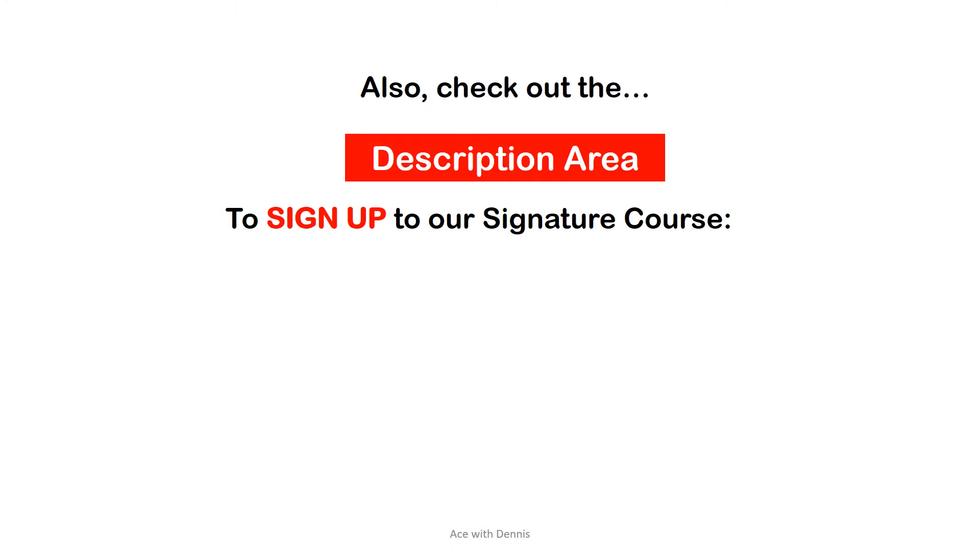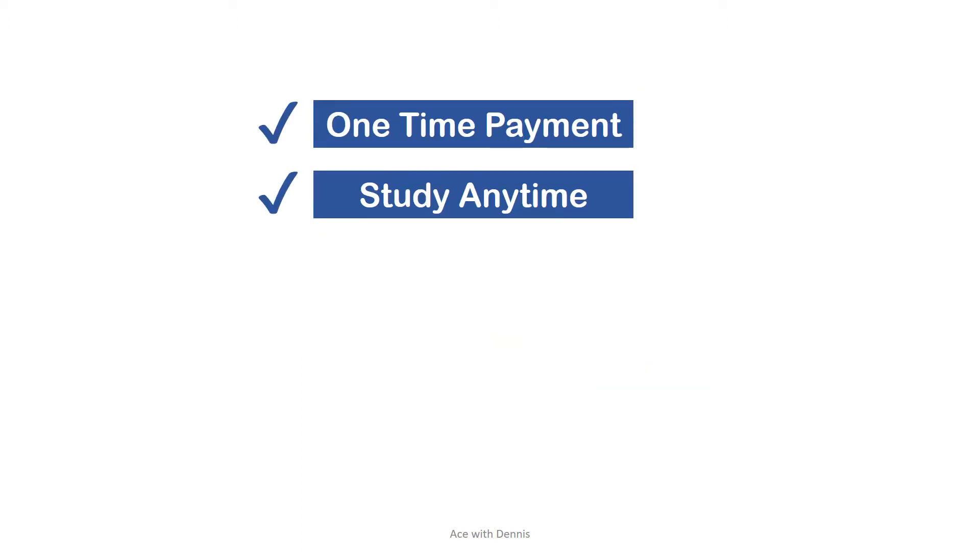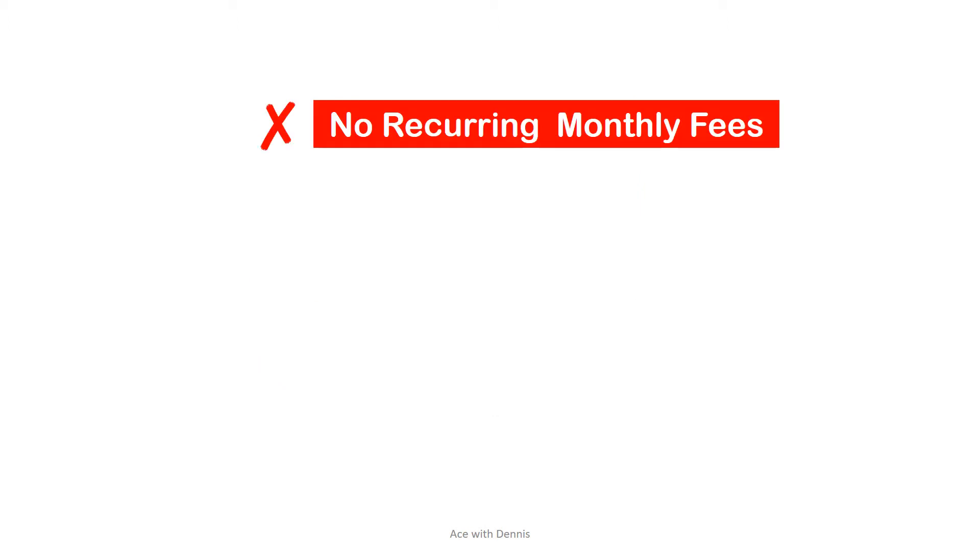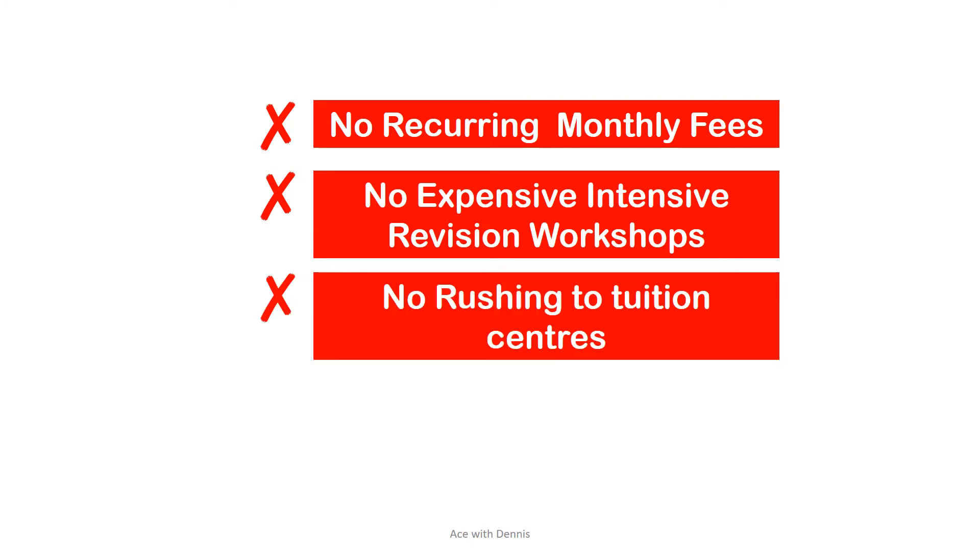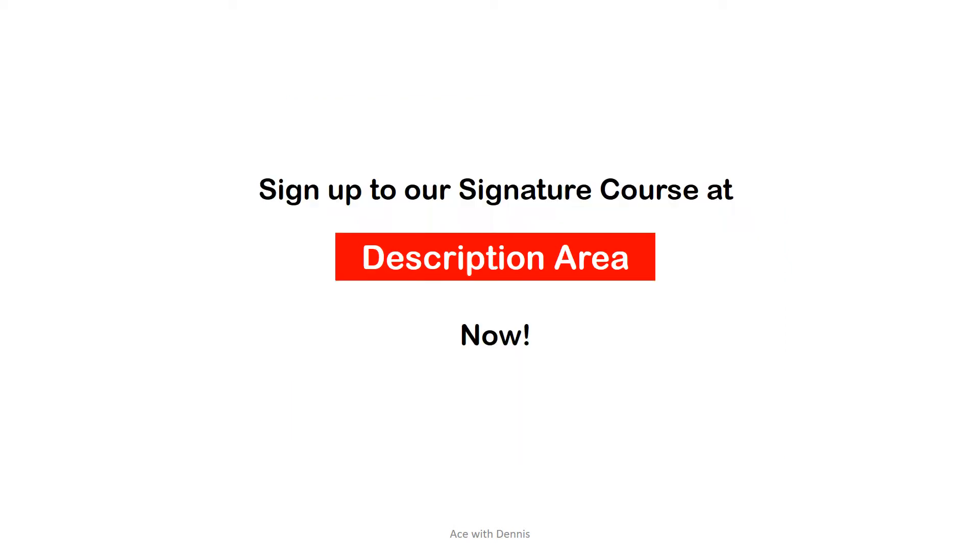Also, check out the description area to sign up to our signature course, GCE O Level Pure Physics full course at unbelievable price. It's one-time payment. You can study anytime you like, anywhere at your convenience. You can also easily monitor and track your study with Udemy's system. There is no recurring monthly tuition fees, no expensive intensive revision workshops. You don't have to rush to any tuition centers. You don't have to worry on missing any lessons. Sign up our signature online course at description area now.